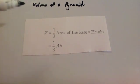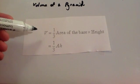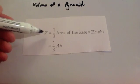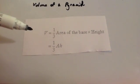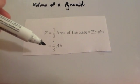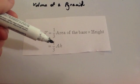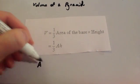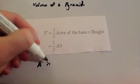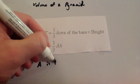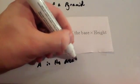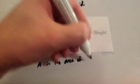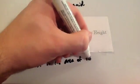In this video we're going to look at the volume of a pyramid. The volume of a pyramid is given by the formula: a third times the area of the base times the height — written as (1/3) × A × h, where A is the area of the base.